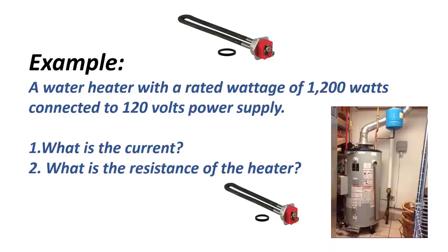A water heater with a rated voltage of 1,200 watts is connected to a 120-volt power supply. Question one: what is the current? And question two: what is the resistance of the heater?